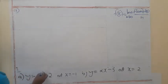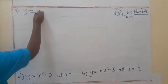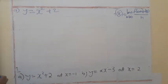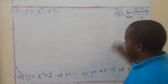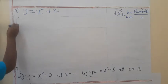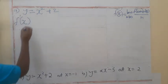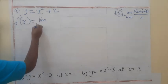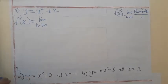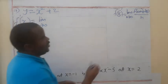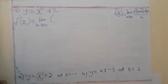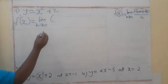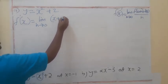So we have Y is equal to X squared plus 2. When we apply this approach, F prime is equal to the limit as H tends to 0. Now, what it means is that where there is X in the function, we substitute X plus H. So this X has power 2, and where there is X we put X plus H, then to the power 2.